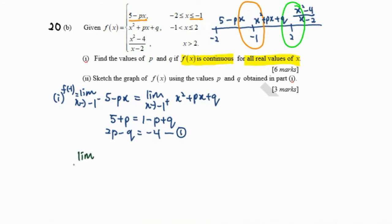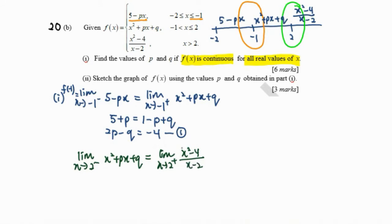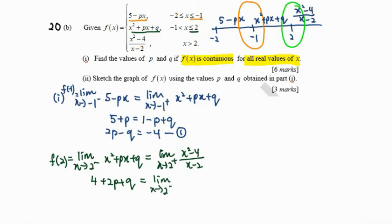For the point x equals 2, we find the limit as x approaches 2 from the left-hand side, which is x squared plus px plus q, and the limit from the right-hand side is x squared minus 4 over x minus 2. The point x equals 2 occurs in the left function, so this limit must equal f(2). Substituting x equals 2 gives 4 plus 2p plus q. For the right-hand side we get 0 over 0, so we need to simplify before evaluating the limit.